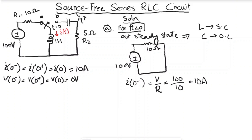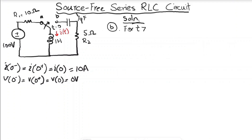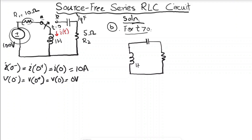For t greater than zero, the switch breaks from terminal A and connects to terminal B. This excludes R1 and the voltage source from the circuit, forming a new source-free RLC circuit. We redraw this new circuit with the inductor, capacitor, and resistor R2, with current i(t) flowing through the inductor.